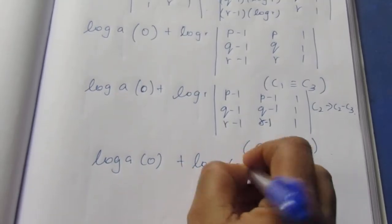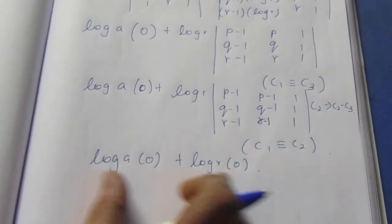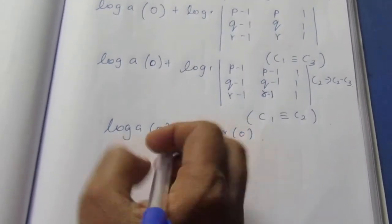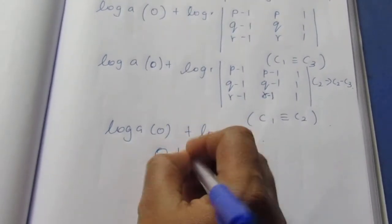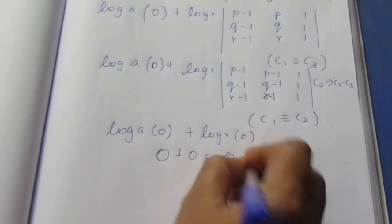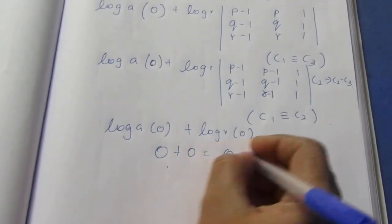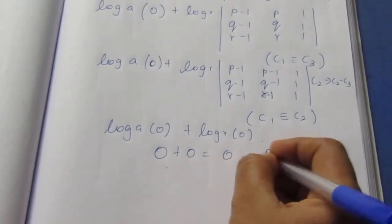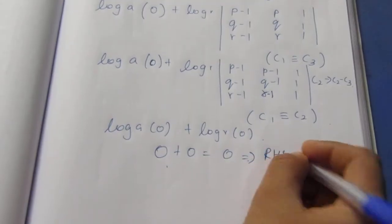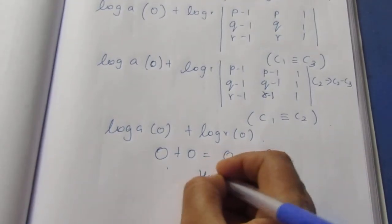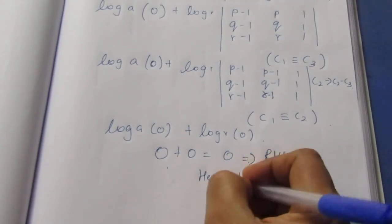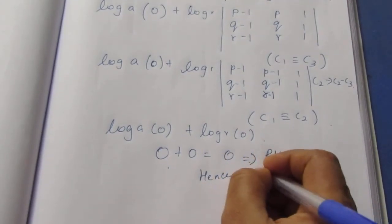Therefore 0 times any number equals 0, and the total is 0, which equals our RHS. Hence proved.